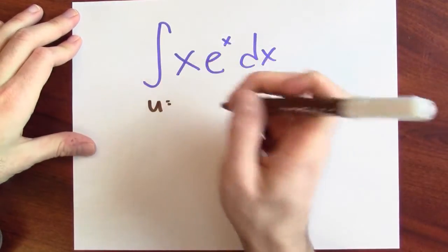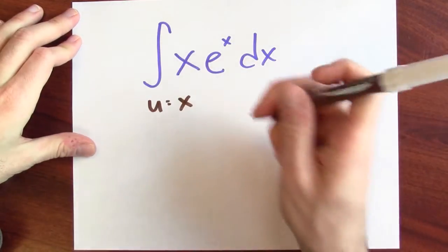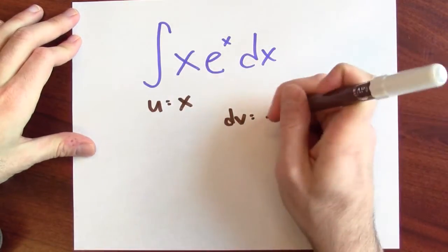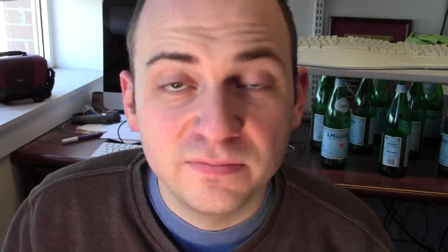So let's set that down. Let's set u to be x, because I'd like to differentiate that part. And I'm willing to anti-differentiate what remains.